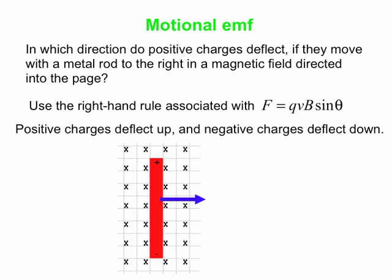And what really happens, of course, is just the electrons move around, the conduction electrons, and they move down from the top toward the bottom. And so there's a deficit of electrons at the top. So there is a net positive charge at the top.